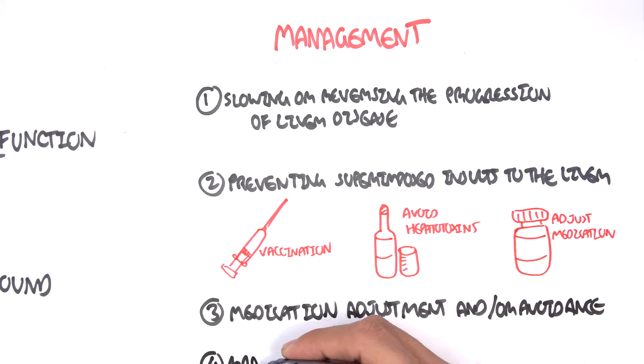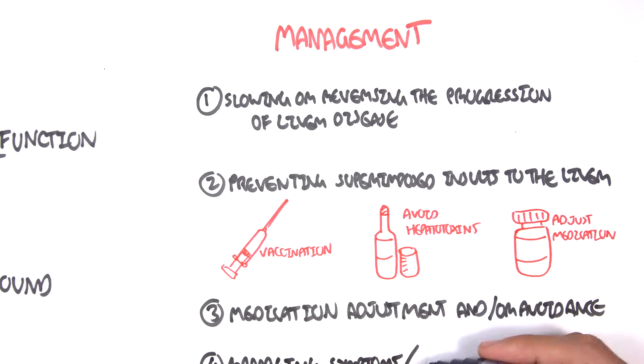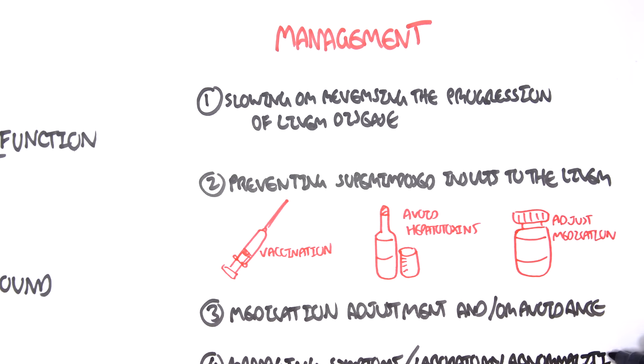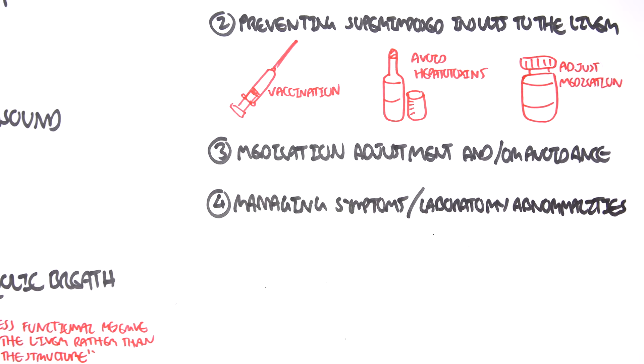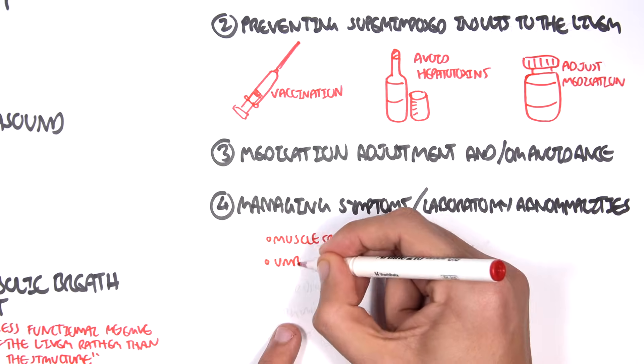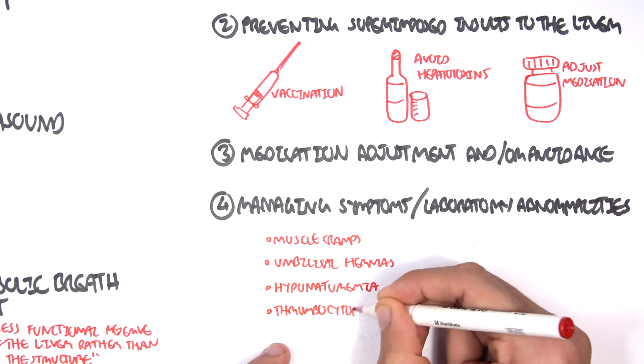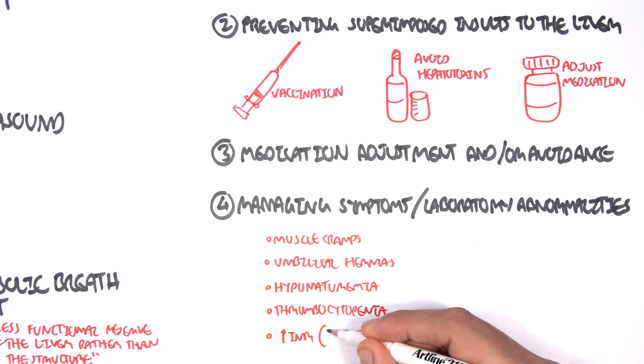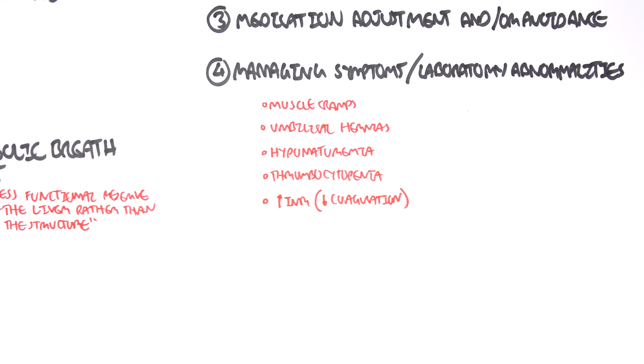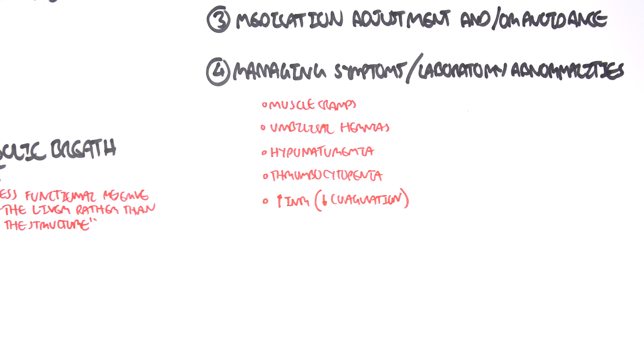Number four, we manage the symptoms and laboratory abnormalities associated with liver cirrhosis. We address the muscle cramps, umbilical hernias, hyponatremia, thrombocytopenia, and the increase in INR, which basically means your body's not clotting properly. It's important to address all these factors.